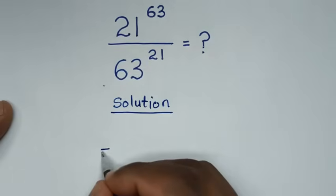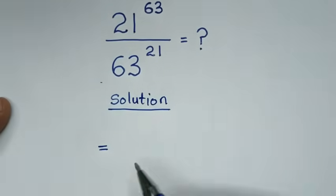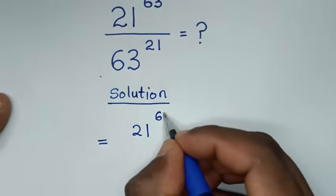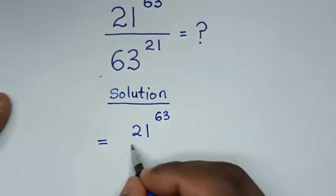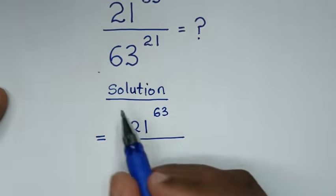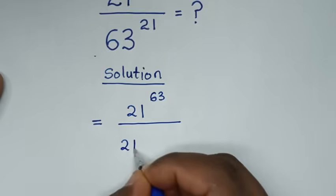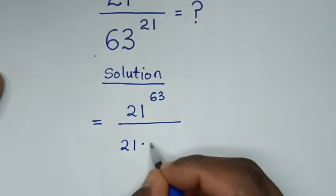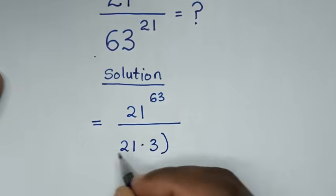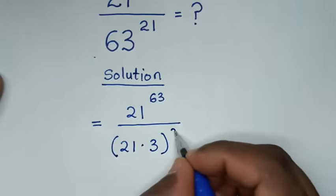Here it will be equal to: in the numerator it is 21 power of 63 over, in the denominator 63 is the same as 21 times 3, then bracket this, to the power of 21.